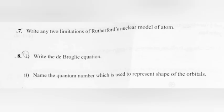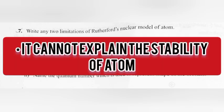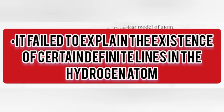Question 7: Write any two limitations of Rutherford nuclear model of atoms. Answer: It cannot explain the stability of atoms. It failed to explain the existence of certain definite lines in the hydrogen spectrum.